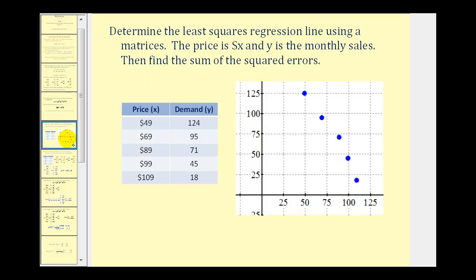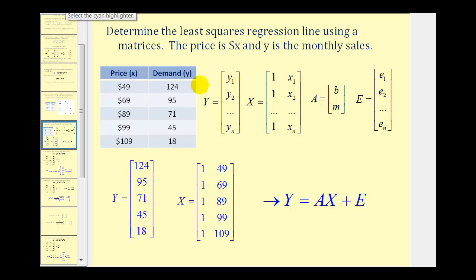Let's look at an example. We want to determine the least squares regression line from the given data, where x is the price in dollars and y is the demand in monthly sales. From the graph of the data, a linear regression line is going to be a pretty good fit. We start by setting up matrix Y — a five-by-one column matrix of the given y values — and matrix X, a five-by-two matrix with a first column of ones and a second column of the given x values.